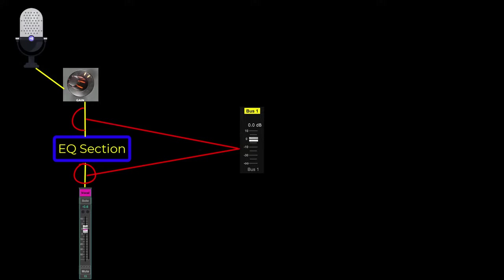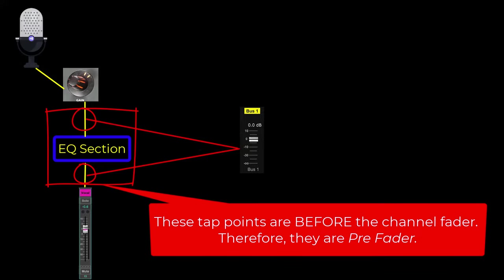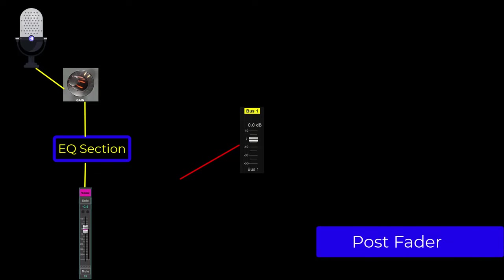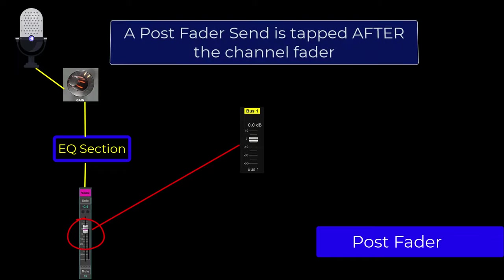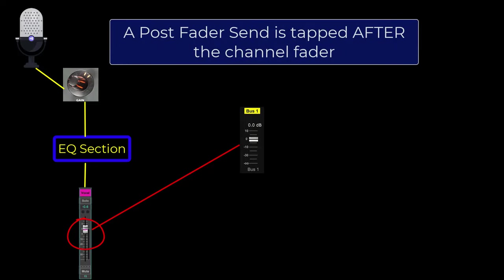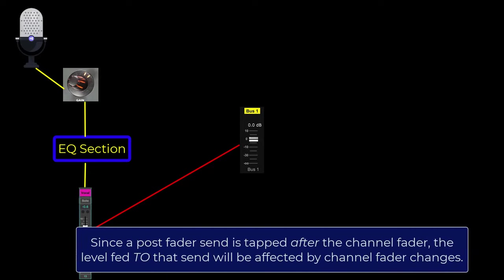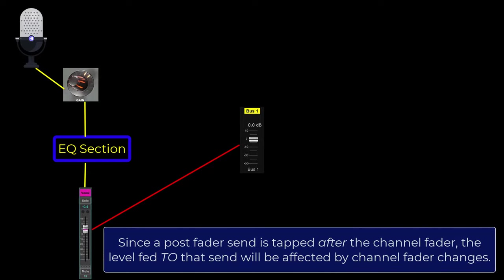With post EQ, anything you do on the channel EQ would also go to the post EQ send. You can see that these tap points would be before the channel fader — therefore, they are pre fader. We could also have the option to pick a send point that is post fader, meaning it would get its signal after the channel fader. So not only would it include everything that comes into the channel fader like the EQ, but it would also pick up the channel fader moves itself. In other words, a post fader send will track with the channel fader changes.